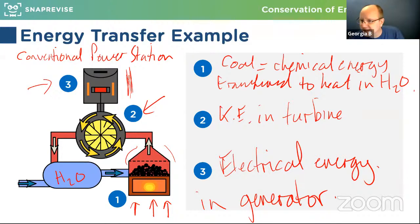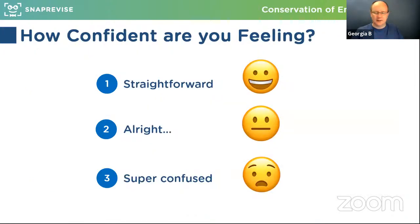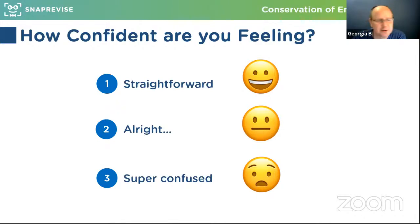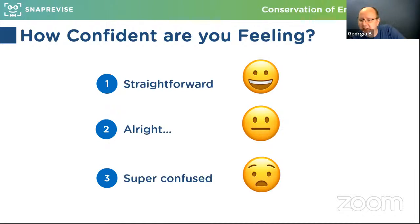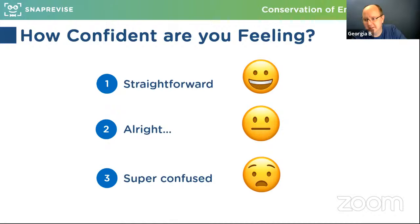I think we've dwelled long enough on this — any other questions, please pop them in the chat. Can you give me an indication of how clear everything has been so far? One if things are seeming quite straightforward, two if you're kind of alright, and three if you're really confused. If you're feeling confused, don't worry — I'm very happy to go back and cover anything again. It's looking like people are fairly happy — thank you everyone.